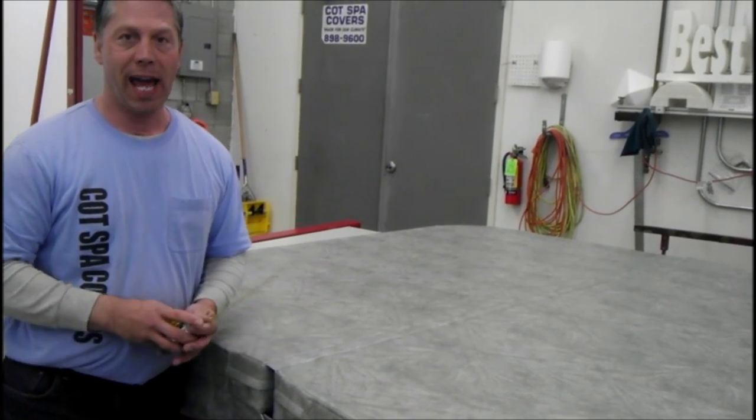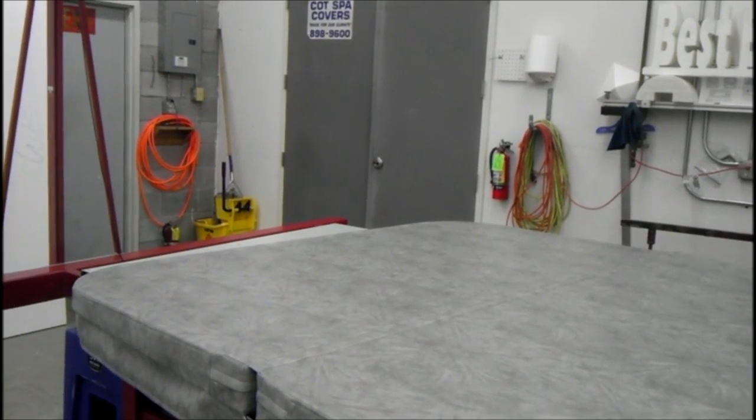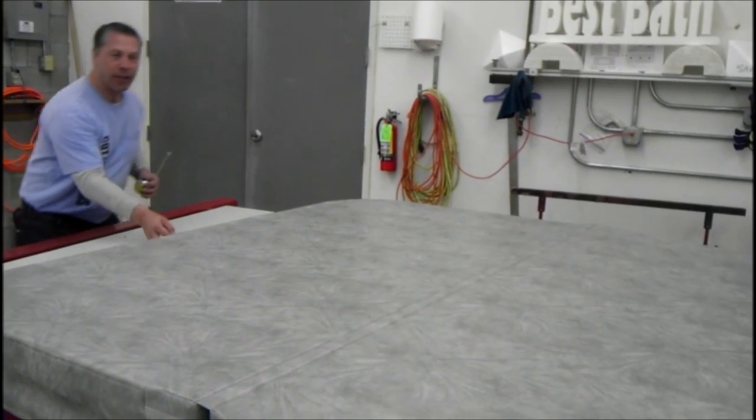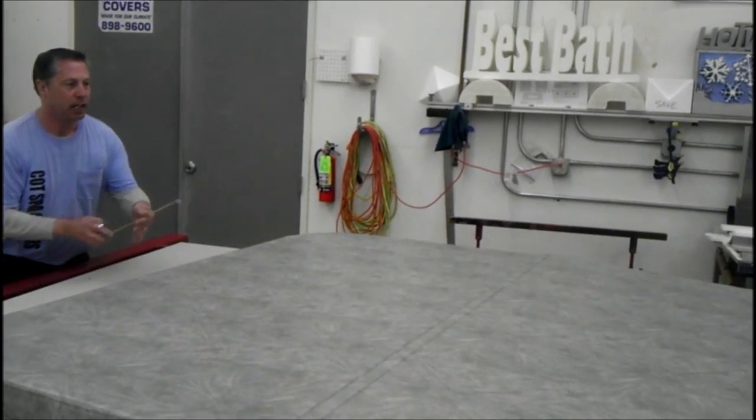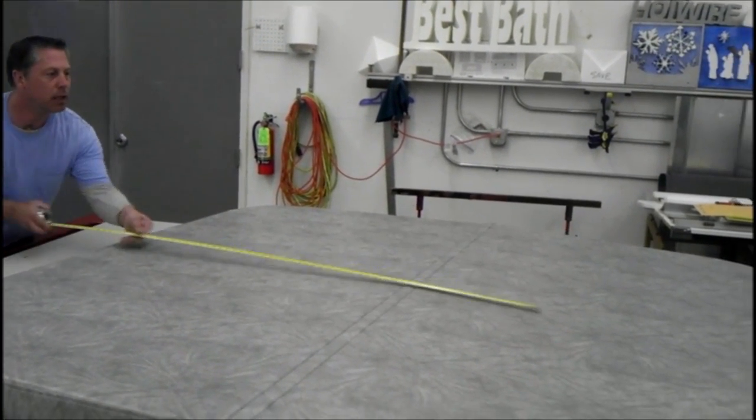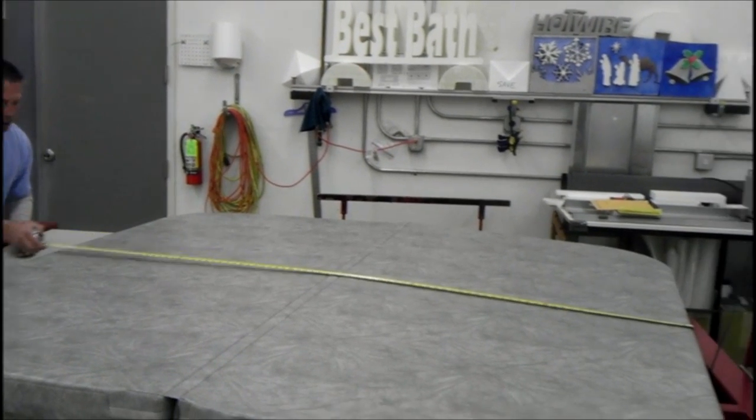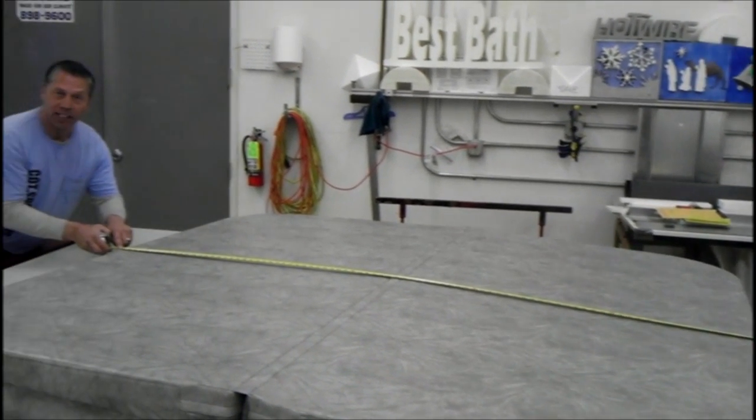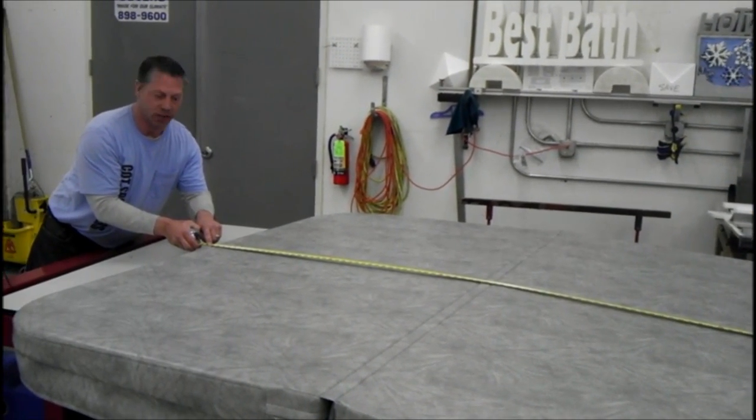The second measurement is what we call the handle-to-handle, the handle being on the front, measuring in the center. Whatever number that this comes up to is going to be the second measurement.